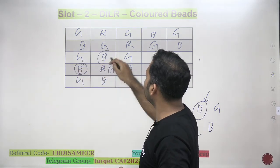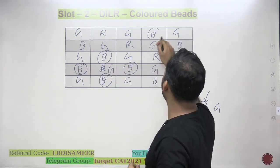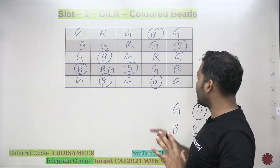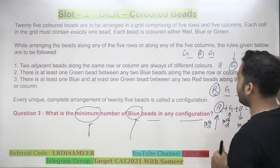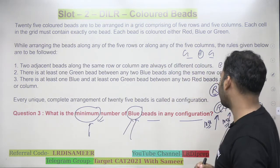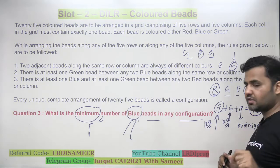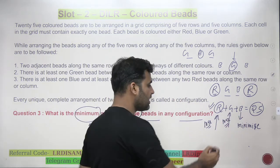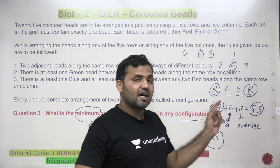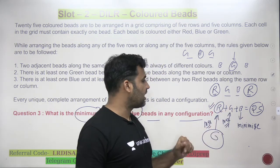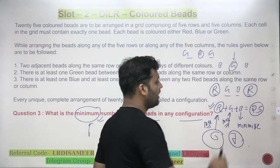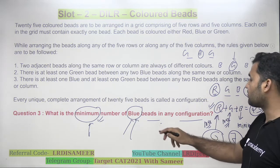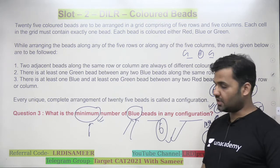So in this case, maximizing green gives seven blue beads. This cannot be the answer because we are looking for the minimum. In one case, I maximized red beads and the number of blue beads used was 6. In another case, I maximized green beads and the number of blue beads was 7. Since the question asks for the minimum number of blue beads, the answer is 6. The minimum number of blue beads would be 6.